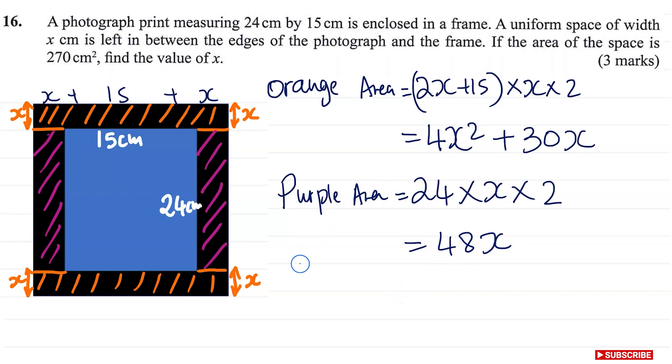So now let's do the total area. So the border of this photograph, total area is going to be equal to this area, 4x² plus 30x plus this area here, 48x. Collect like terms. And now it's going to be 4x² plus 78x.